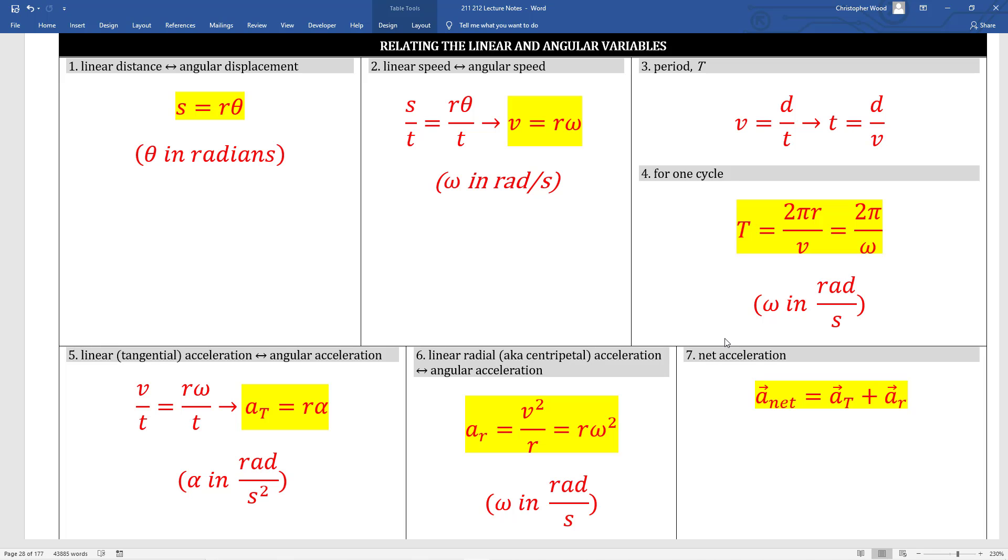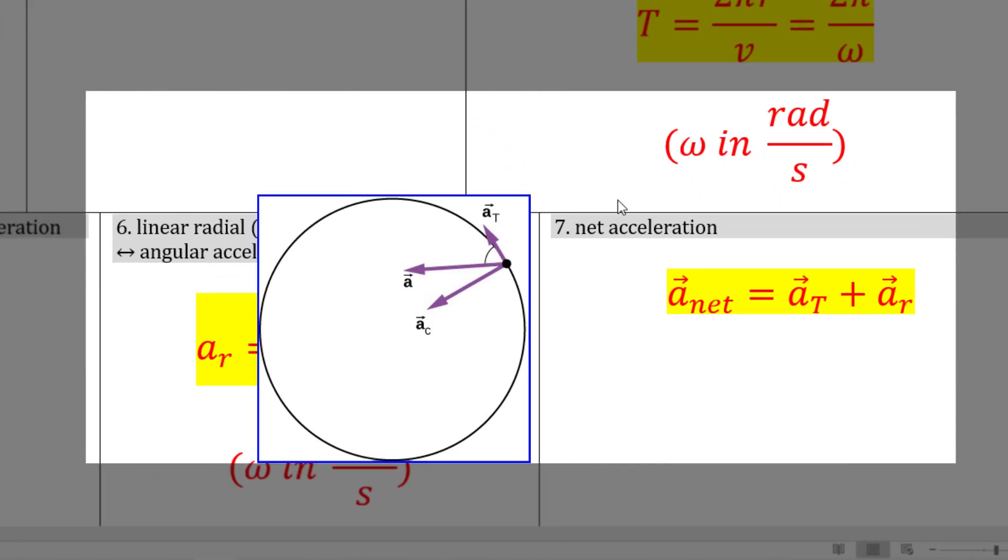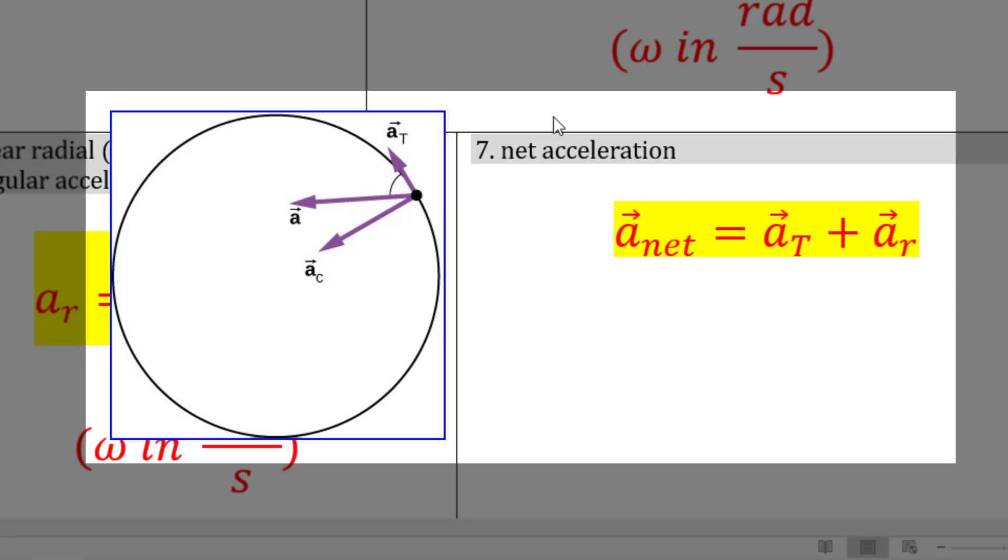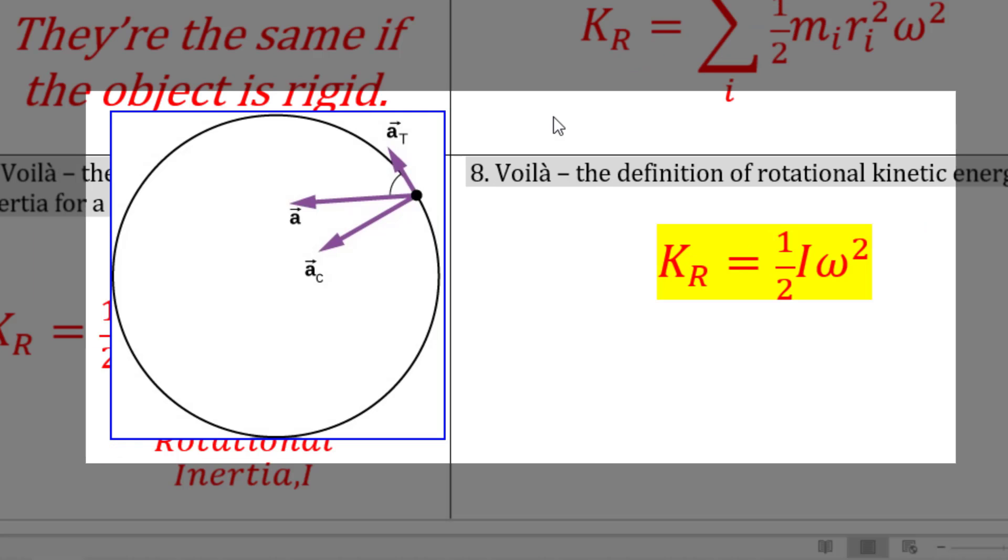Box 7 gives you the expression for net acceleration. We now have two flavors of acceleration, tangential and radial. Tangential acceleration is also known as linear or translational acceleration. Radial acceleration is also known as centripetal acceleration, so both of those need to get blended together.